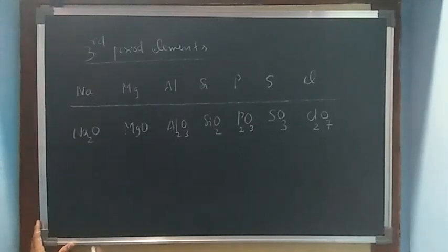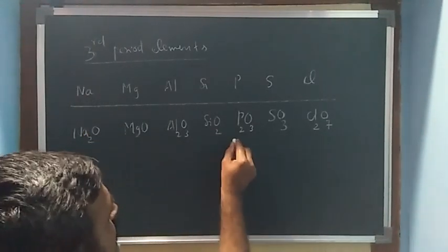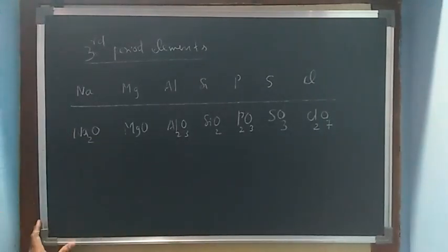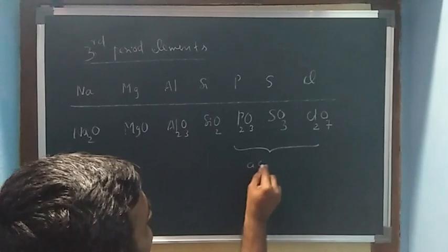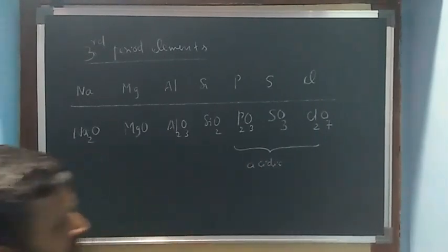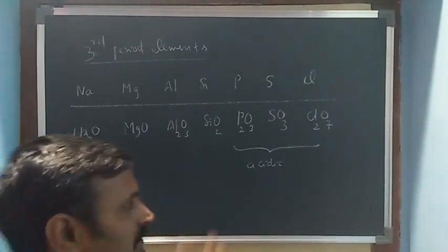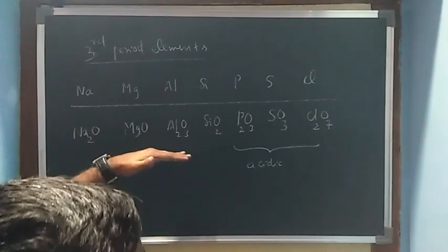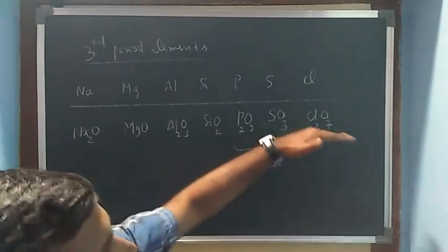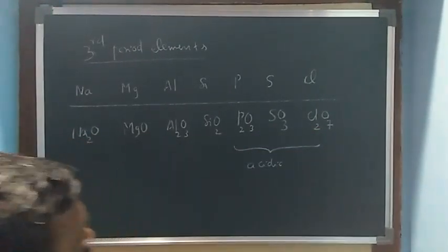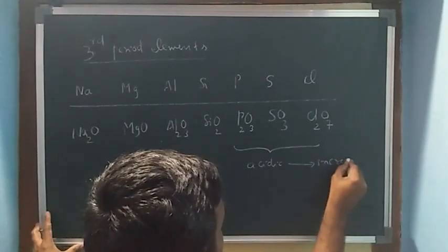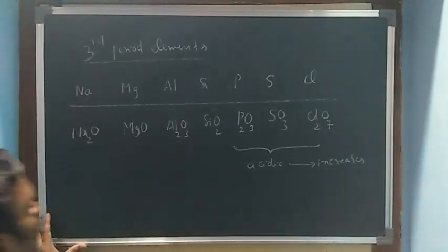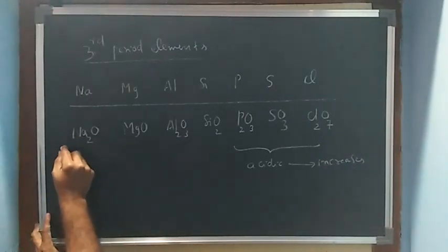In this last three p-block elements list, we have the most acidic nature. What is the nature of the compounds means when we are going from left to right in this period of oxides, acidic nature in this direction increases, and it starts with basic nature.